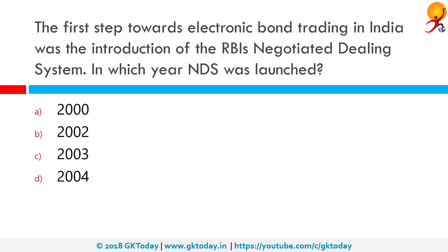The first step towards electronic bond trading in India was the introduction of RBI's Negotiated Dealing System — in which year was this launched? The RBI created the Negotiated Dealing System as an electronic platform in August 2002 for dealing in government securities. It is an electronic trading platform operated by the RBI to facilitate the issuing and exchange of government securities and other money market instruments. The correct answer is 2002.